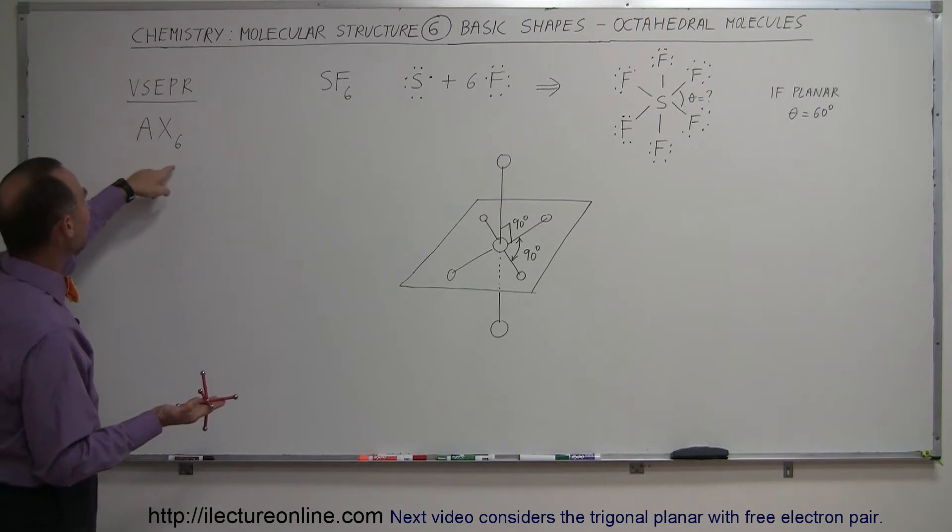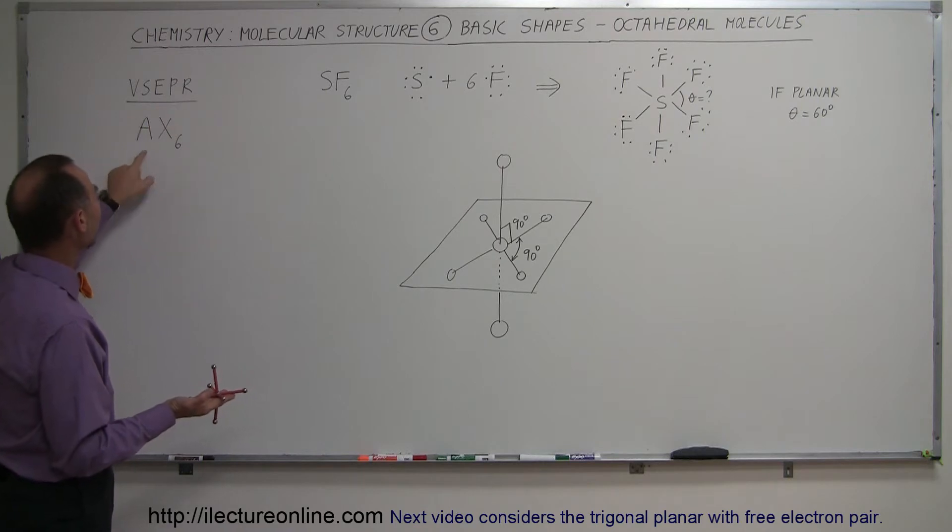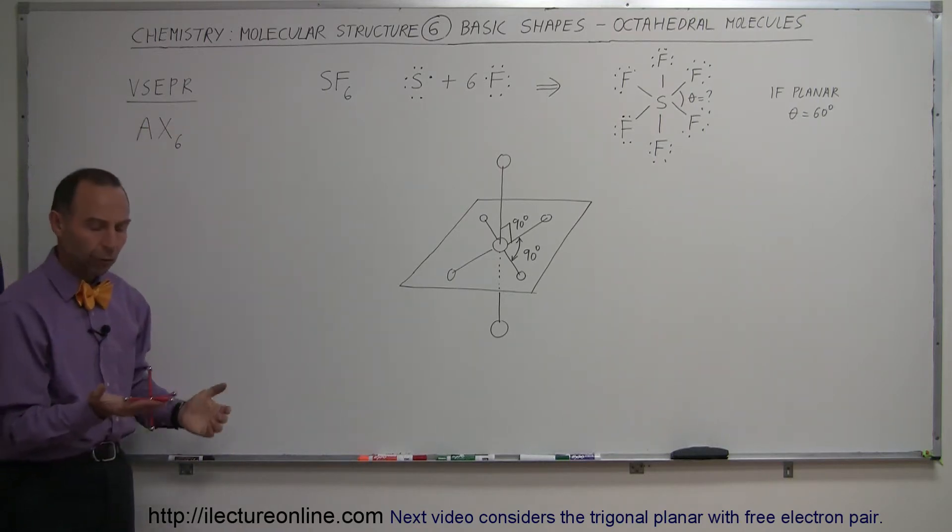And of course, for the VSEPR, the valence shell electron pair repulsion concept, we have one central atom and six terminal atoms forming that molecule.